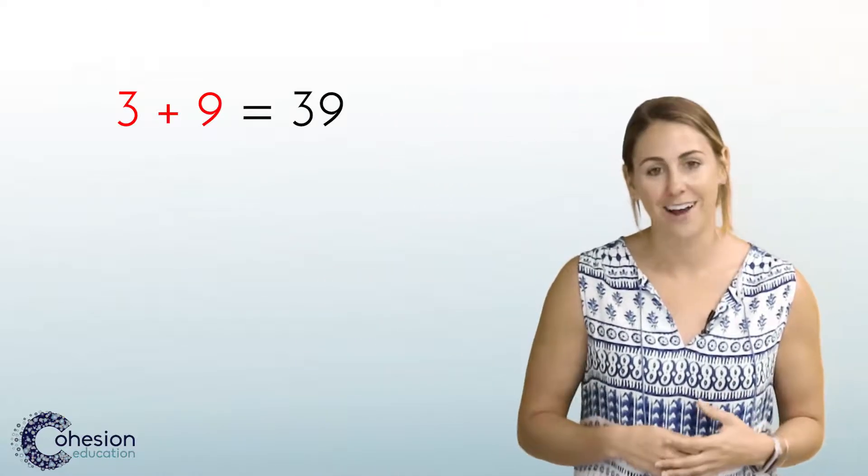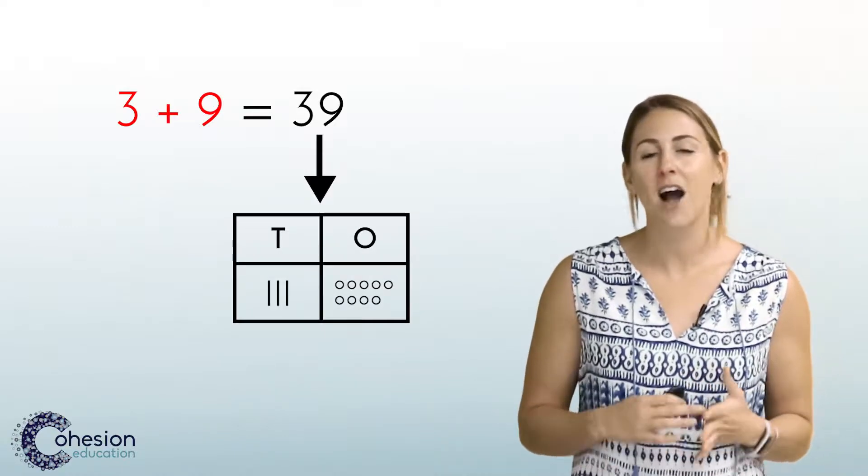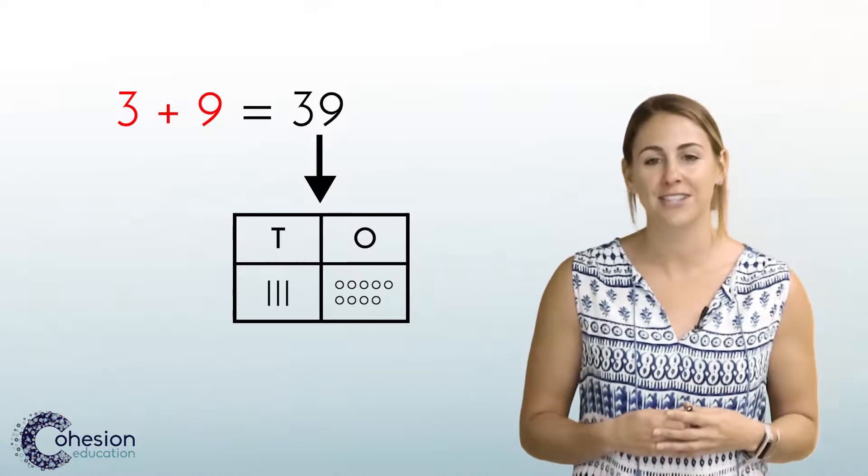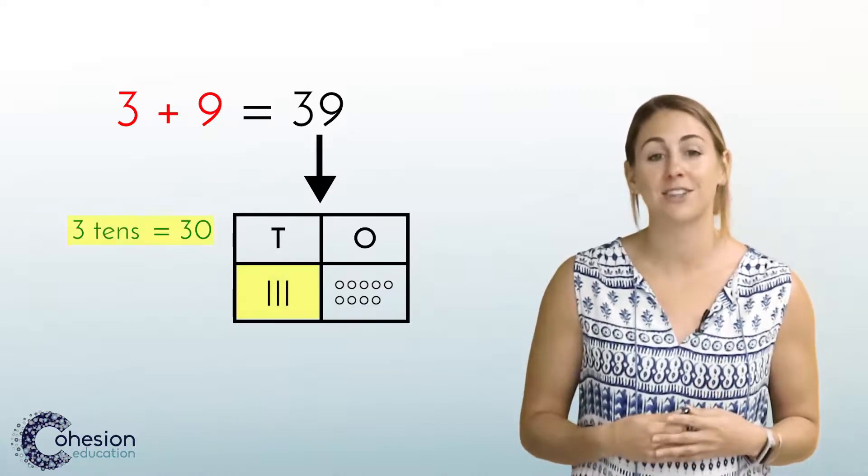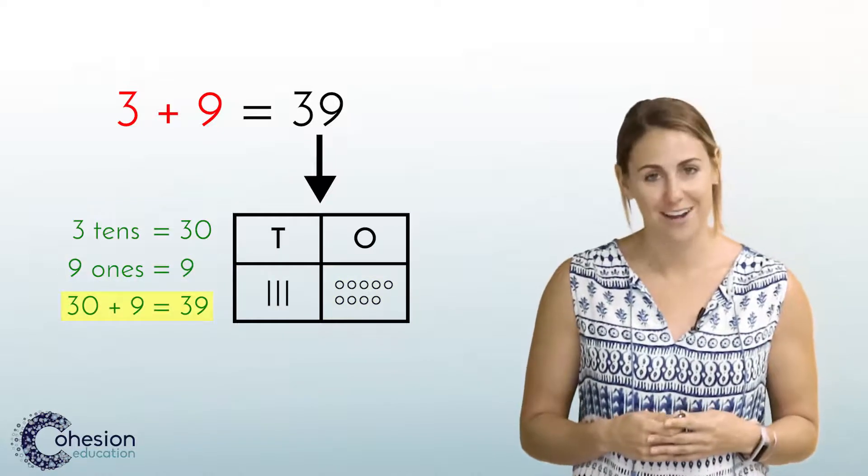Another common occurrence happens when students write a two-digit number in expanded form. Students may only write the single digit that they would see in a two-digit number. For example, in the number 39 students will write 3 plus 9 equals 39. Drawing a picture to represent the number will help students see a concrete representation of the values and help with the understanding that the 3 represents 30 and the 9 represents 9: 30 plus 9.